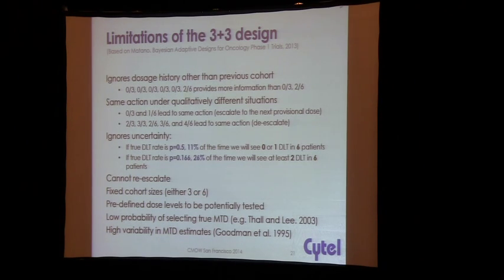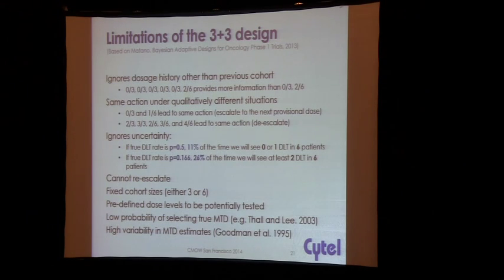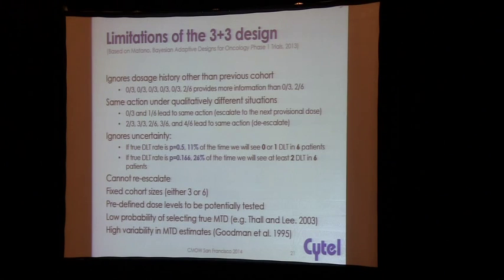You have to pre-define dose levels and can't change them midway. Some simulations by statisticians have shown that you have a low probability of selecting the true MTD, and the 3+3 tends to underestimate the real MTD, as well as showing high variability. You actually hear stories from large pharma companies that in-licensed a program where the smaller company had run 3 or 4 trials and gotten 3 or 4 different MTDs. That's typical of doing these types of trials.